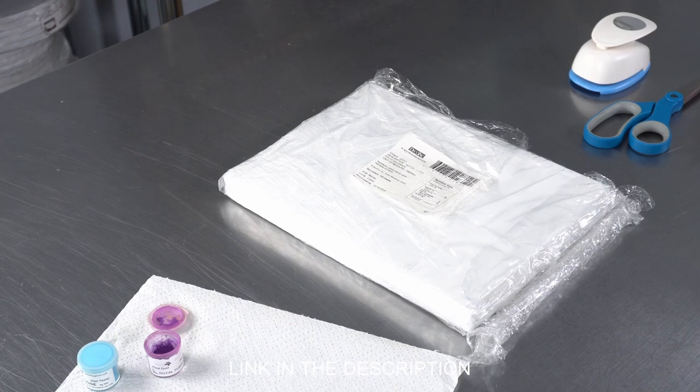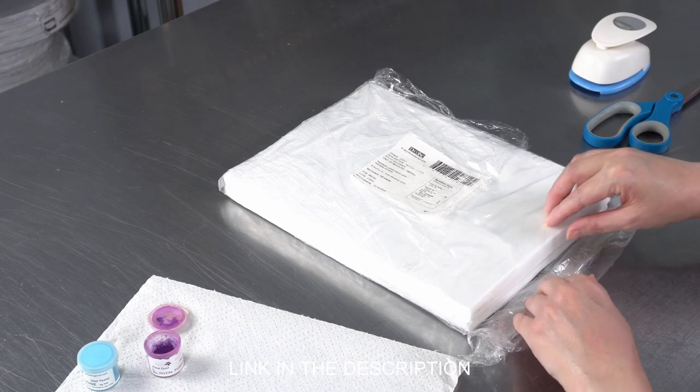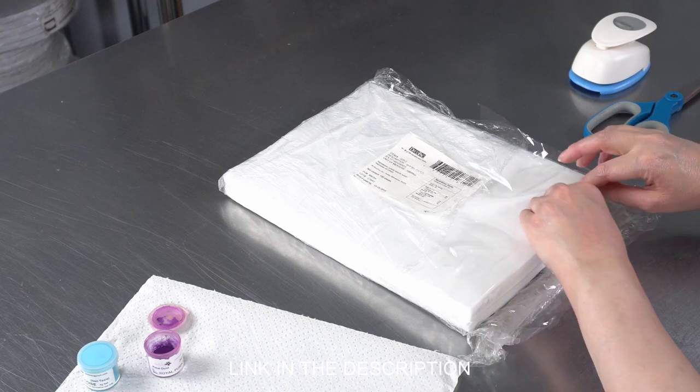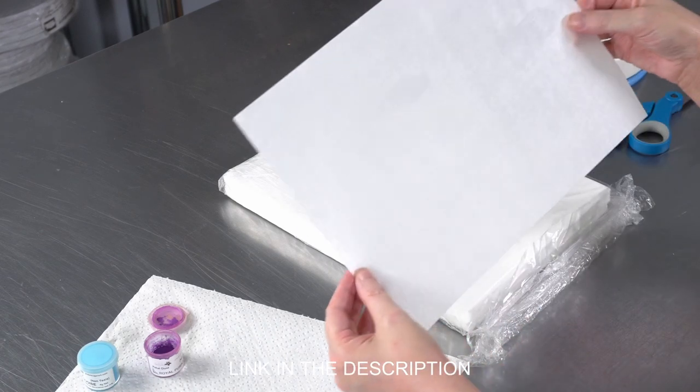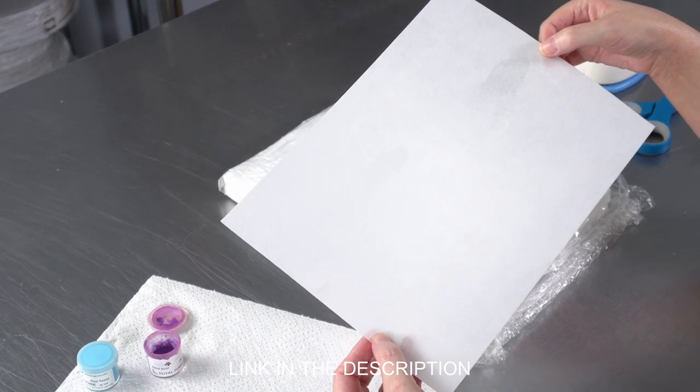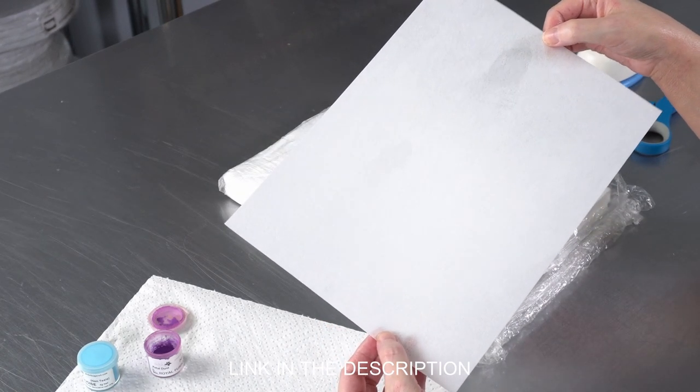Wafer paper. In this video, we're talking about edible wafer paper, particularly the potato starch kind. There's actually a couple of different varieties of wafer paper, and we're talking about this stuff. It comes in basically paper, letter paper-sized sheets.